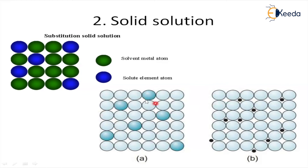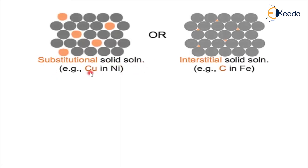These are the two cases: substitutional solid solution and interstitial solid solution. For substitutional solid solution, the example is copper in nickel. Assume nickel is the main constituent — all positions are nickel and the orange color represents copper. When copper is inserted in place of a nickel atom, it is called a substitutional solid solution. Copper occupies the nickel's place, meaning the original nickel atom is substituted by copper. The copper-nickel combination is the best example of substitutional solid solution.